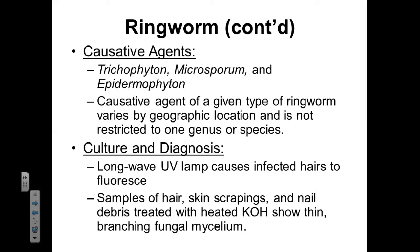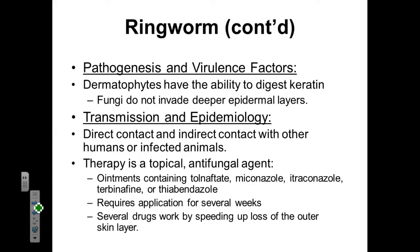To diagnose and culture ringworm, we're going to use long-wave UV lamps, which will cause infected hairs to fluoresce. If you expose a patient's hair to a UV lamp and see fluorescing, that's a good indication they have these fungi growing in the keratin of their hair. Samples of hair, skin, and nails can be treated with heated potassium hydroxide, which will reveal a thin branching fungal mycelium in the keratin structures. These dermatophytes have the ability to digest keratin, so they are never going to invade deeper than the epidermal layers — they want to stay where the keratin is.